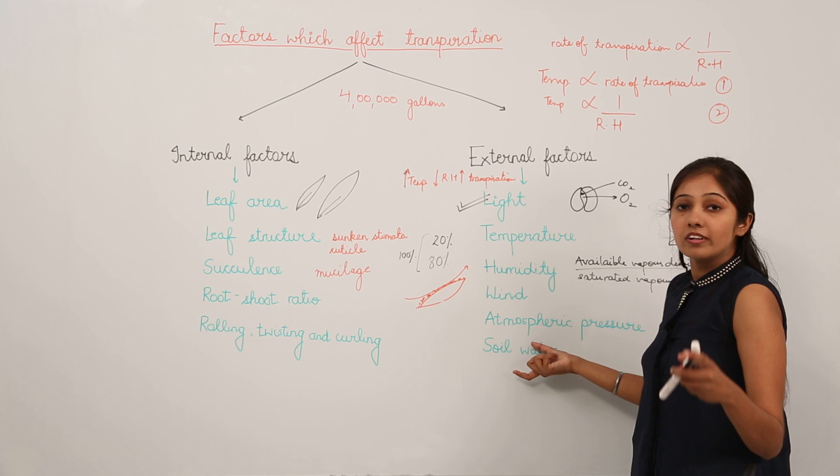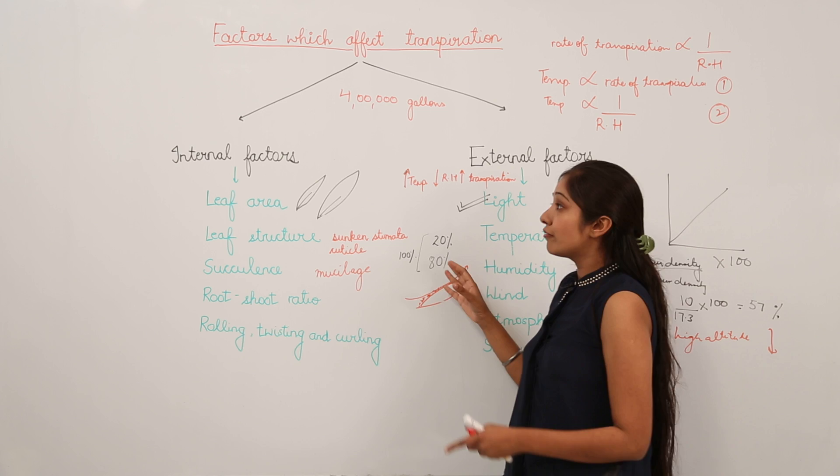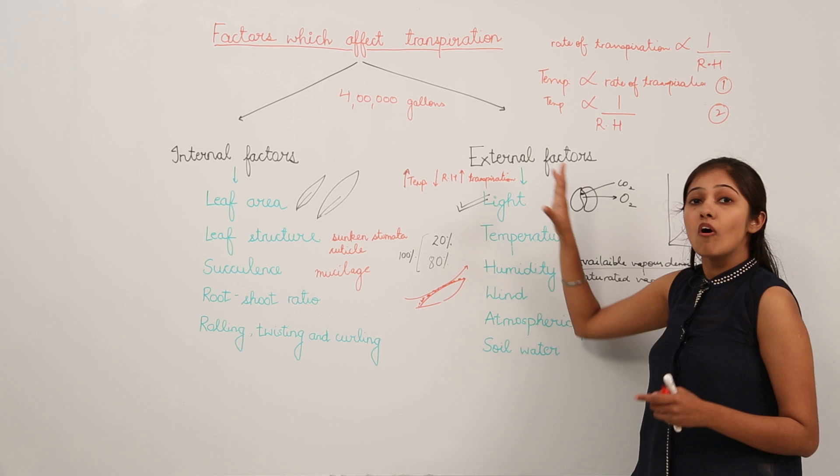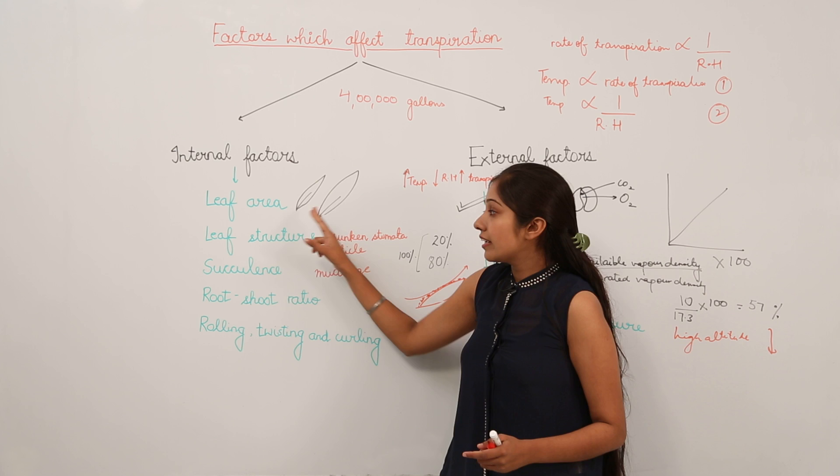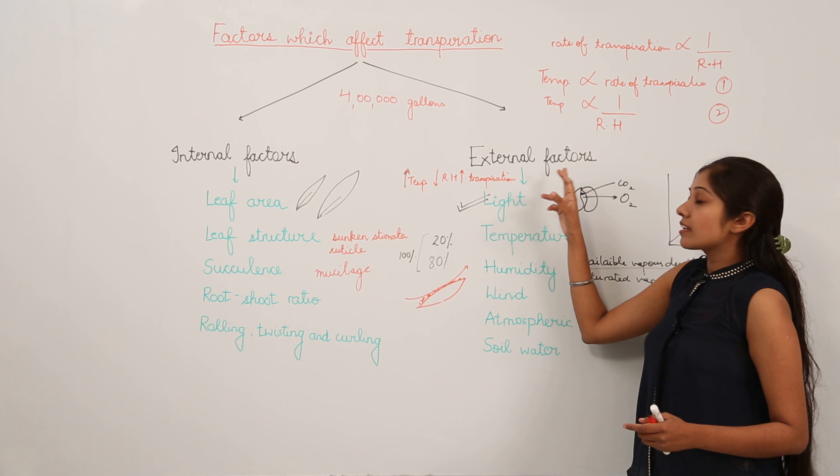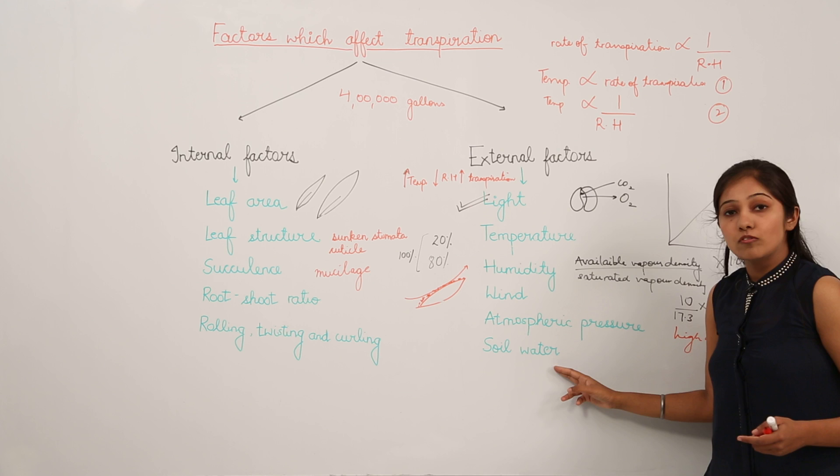To recap, the factors affecting transpiration include internal factors — leaf area, leaf structure, succulence, root-shoot ratio, rolling, twisting, and curling — and external factors — light, temperature, humidity, wind, atmospheric pressure, and soil water.